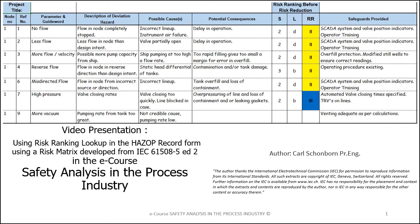This video demonstrates the risk ranking lookup in the eCourse Safety Analysis in the Process Industry. The software used for HAZOP recording and reporting was developed by the author using Microsoft Interactive Workbooks from Excel. A password protected copy can be purchased from the address in the contact list of the course. It allows access to all the cells in the spreadsheet except for the risk matrix risk ranking.